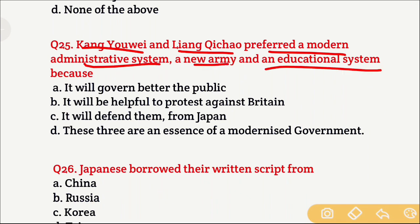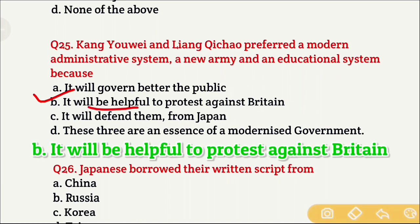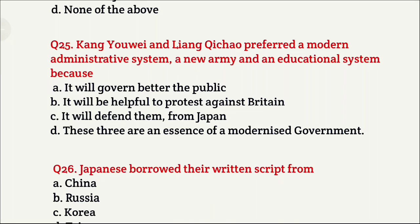Question 25: Kang Youwei and Liang Qichao preferred a modern administrative system, a new army, and an educational system because — they were early reformers of China who preferred these changes. Option A is it will govern the public better, Option B is it will be helpful to protest against Britain, Option C is it will defend them from Japan, Option D is these three are the essence of a modernized government. The right answer is Option B — it will be helpful to protest against Britain, i.e., protest against colonization.